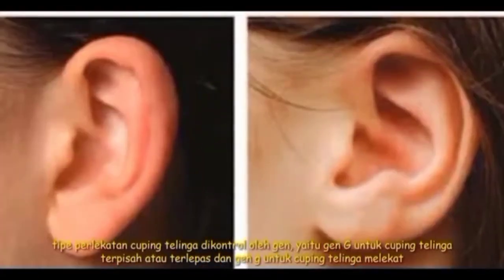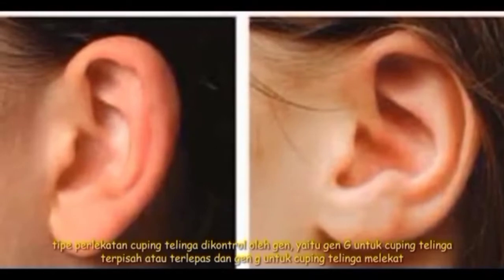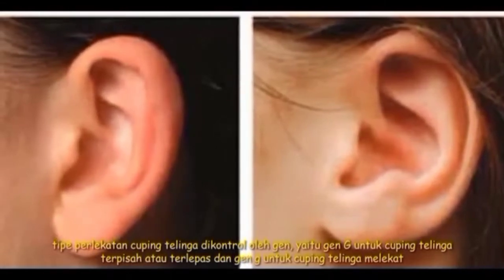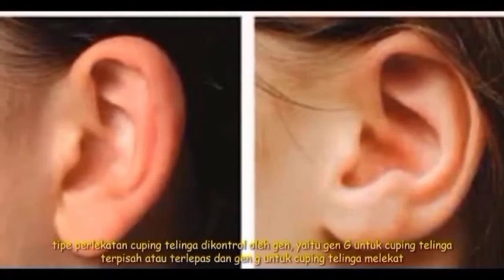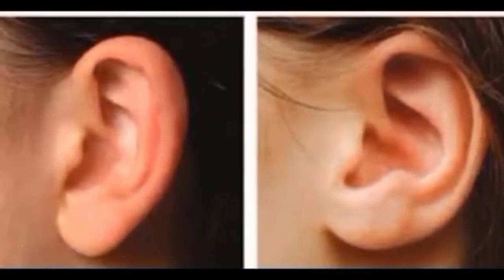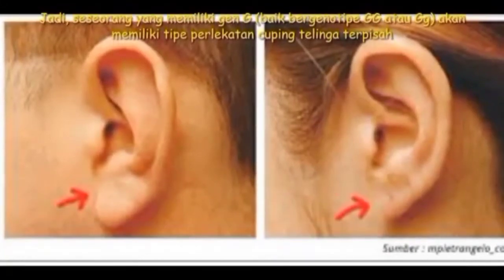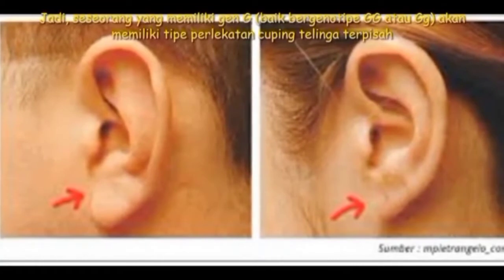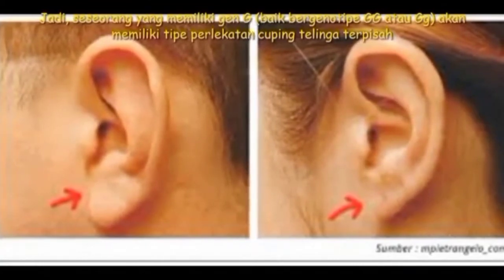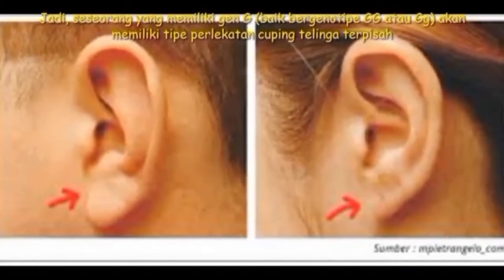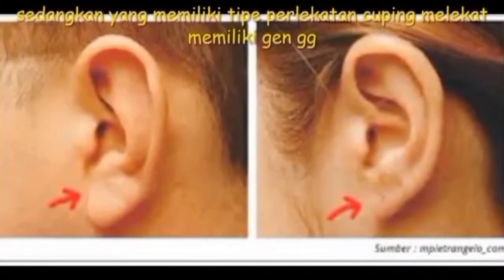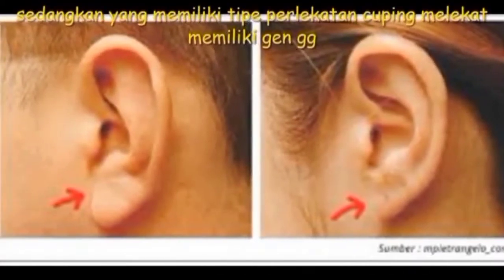Tipe perlekatan cuping telinga dikontrol oleh gen, yaitu gen G besar untuk cuping telinga terpisah atau terlepas dan gen G kecil untuk cuping telinga melekat. Seseorang yang memiliki gen G besar, baik bergenotif G besar-G besar atau G besar-G kecil, akan memiliki tipe perlekatan cuping telinga terpisah. Sedangkan yang memiliki tipe perlekatan cuping melekat memiliki gen G kecil-G kecil.